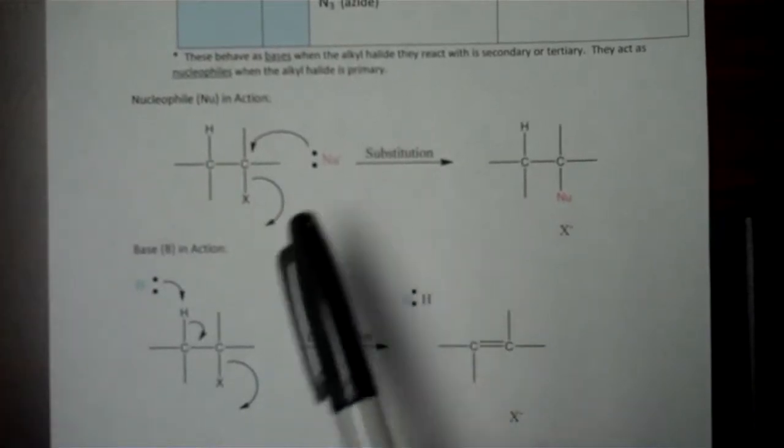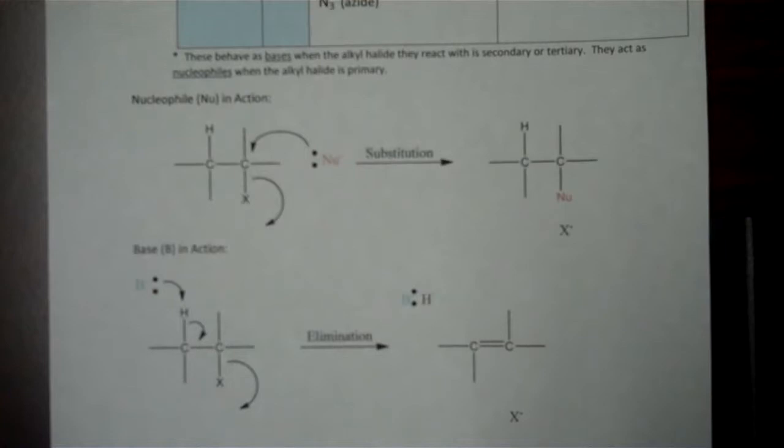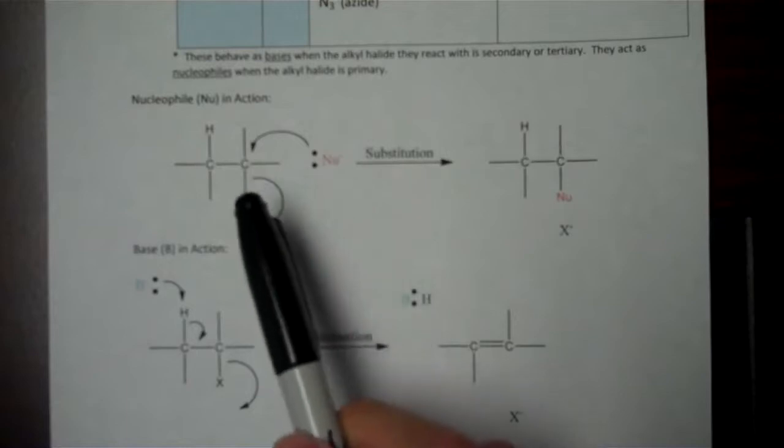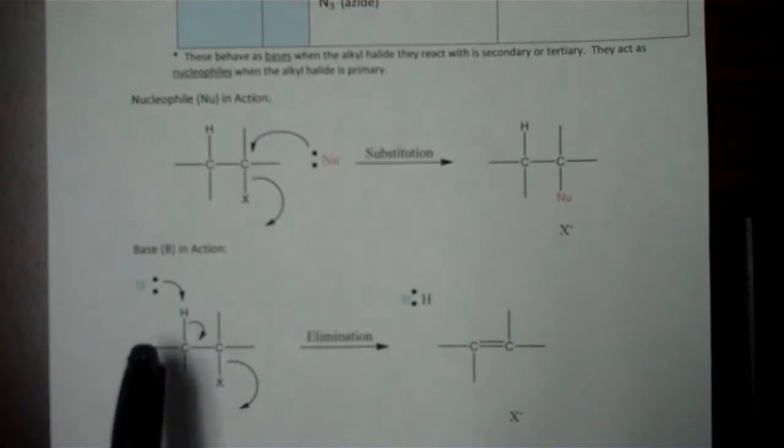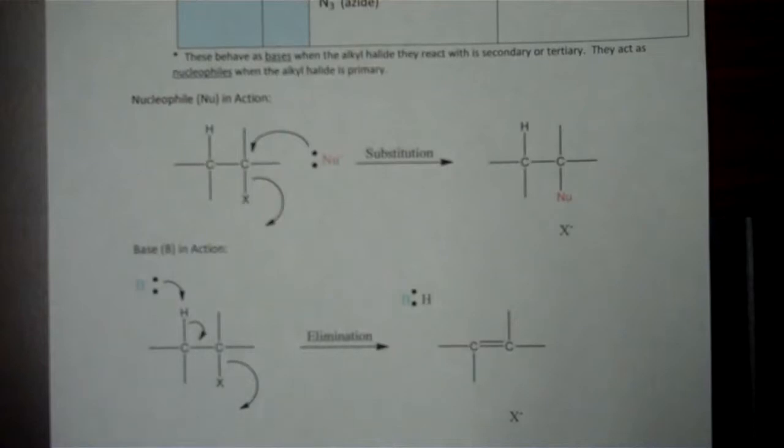In both cases, a nucleophile and a base have a pair of electrons to make a new covalent bond with, but a nucleophile makes that bond to carbon. In a base, those electrons are making a new bond to hydrogen. When you take a hydrogen away from an organic compound, it ends up making an alkene. So with bases, they are a good way to turn alkanes into alkenes if that's your desire.